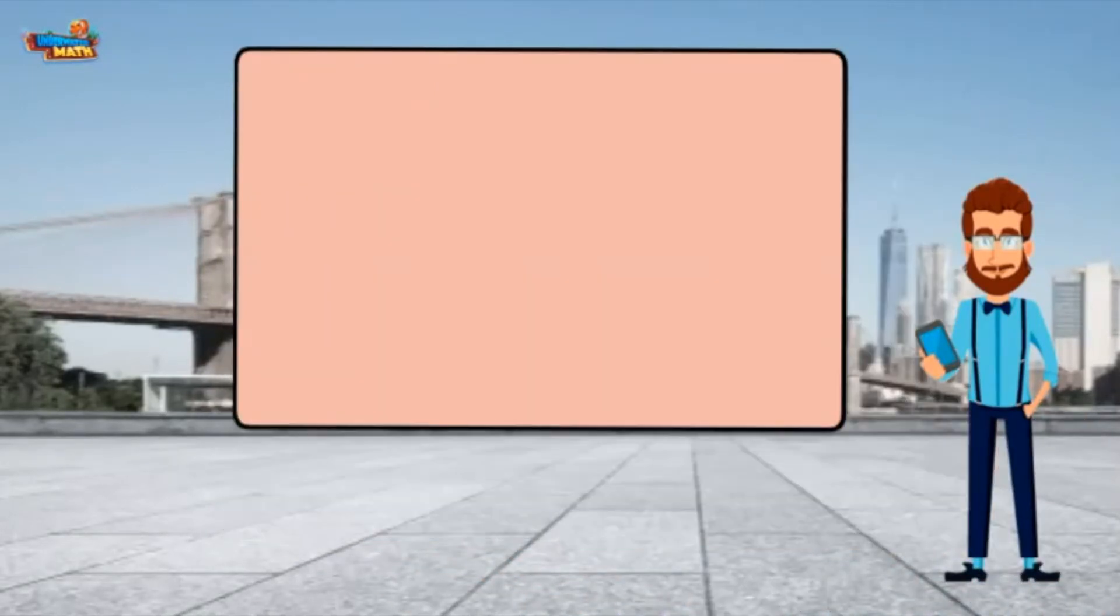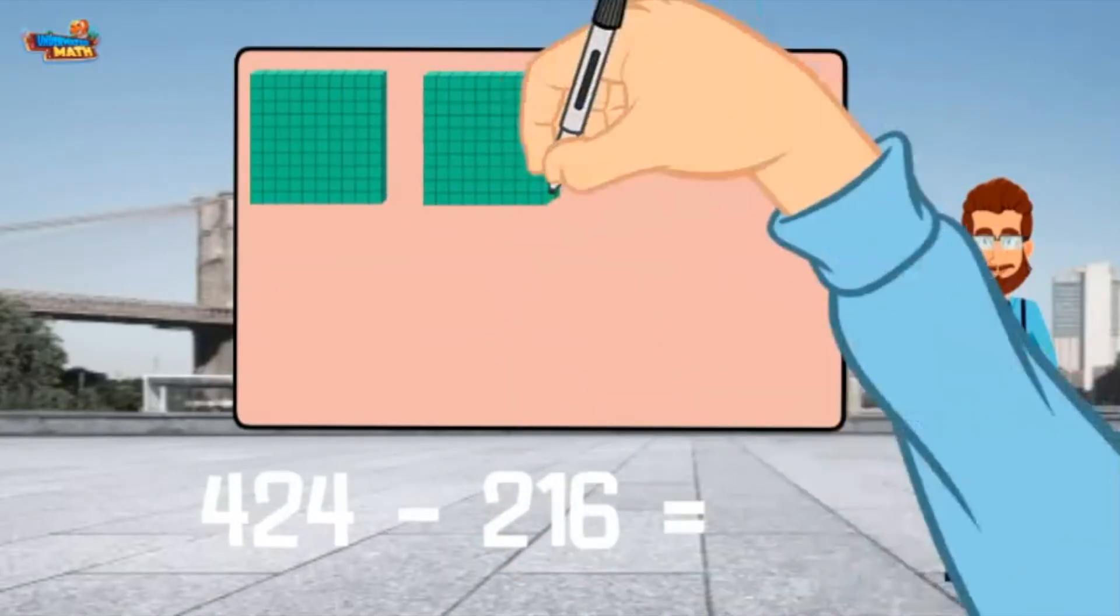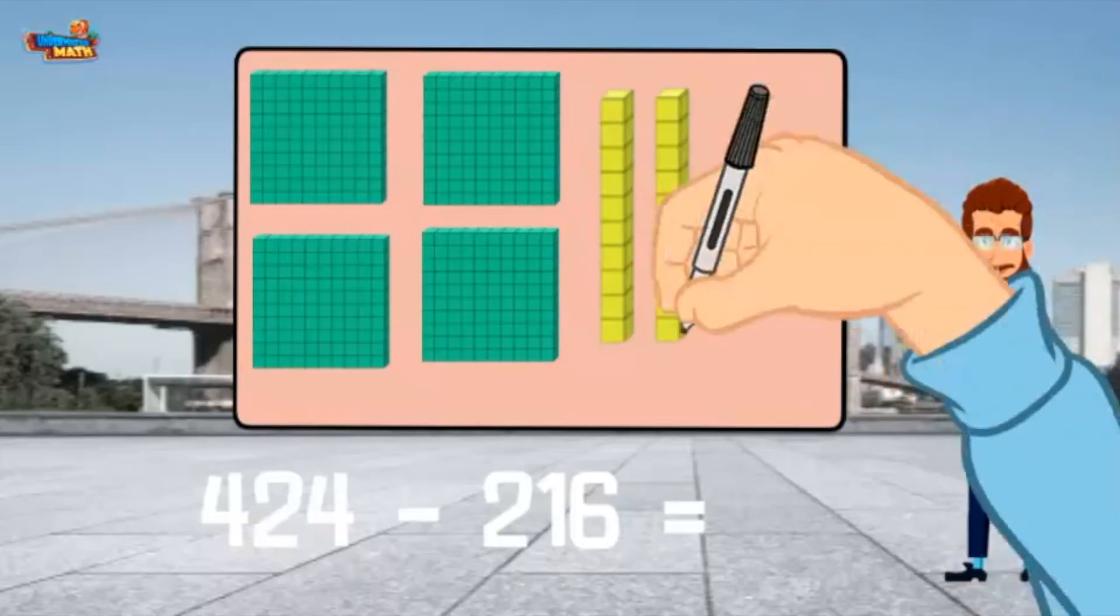Let's practice with 424 minus 216. Model the first value. 4 hundreds, 2 tens, and 4 ones.